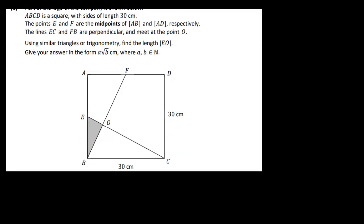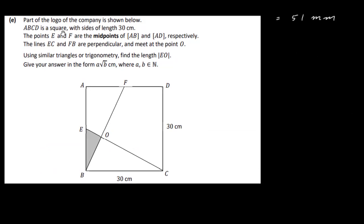Part of the company logo involves a square ABCD with sides of length 30 cm. Points E and F are the midpoints of their respective sides, so each half-side is 15 cm. Lines EC and FB are perpendicular, with 90° angles at their intersection. We need to use similar triangles or trigonometry to find the length EO, giving the answer in the form a√b.